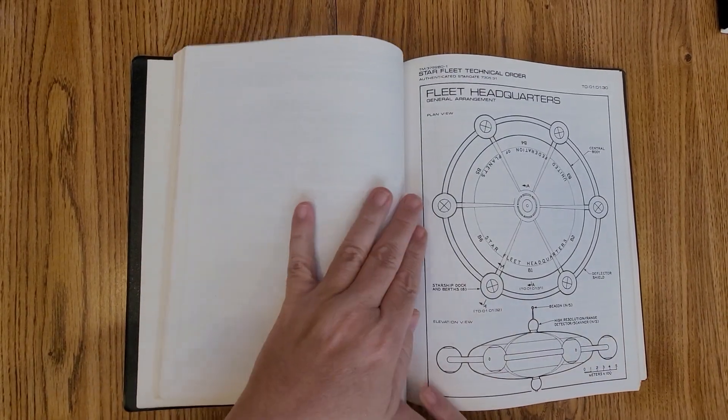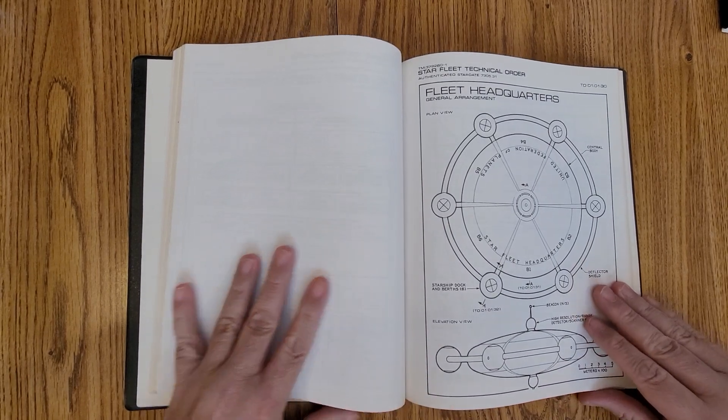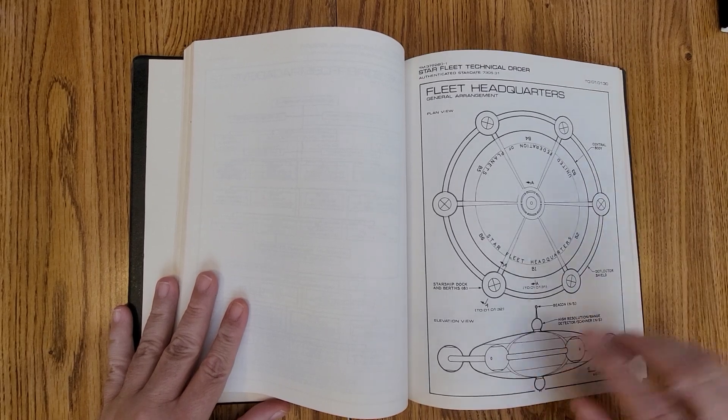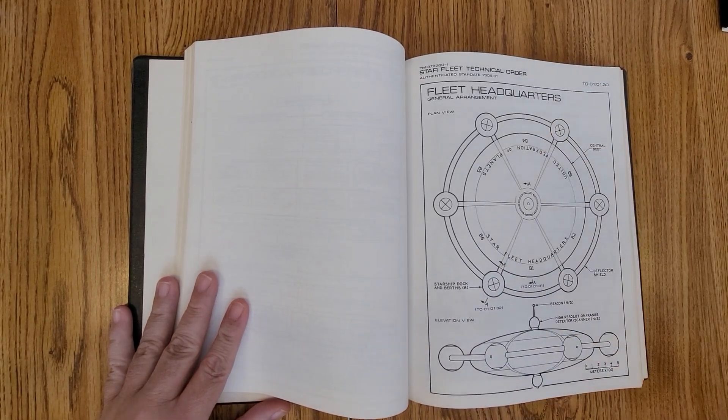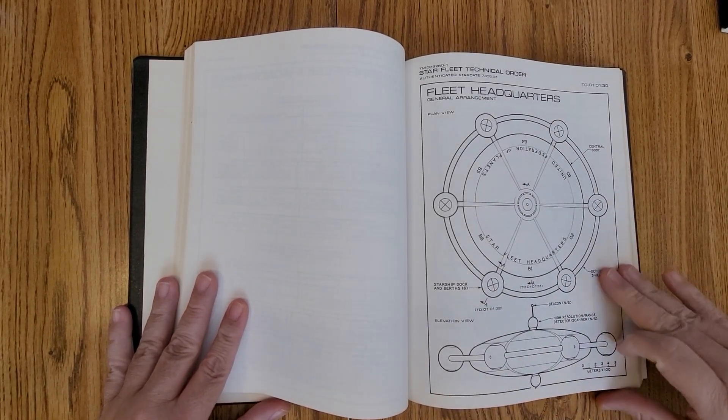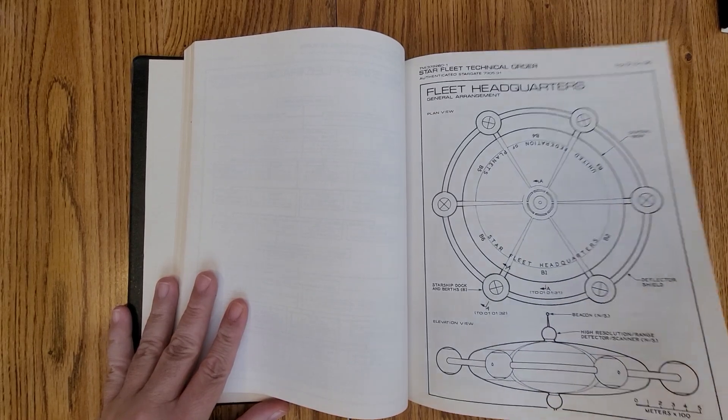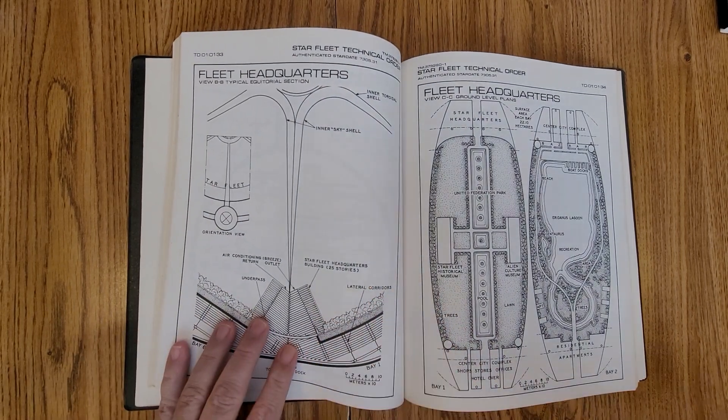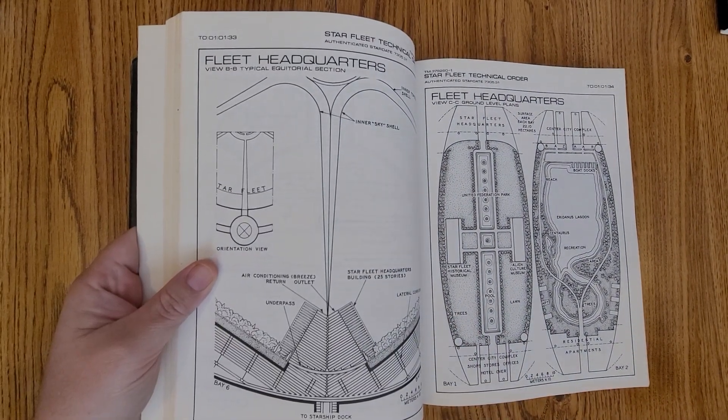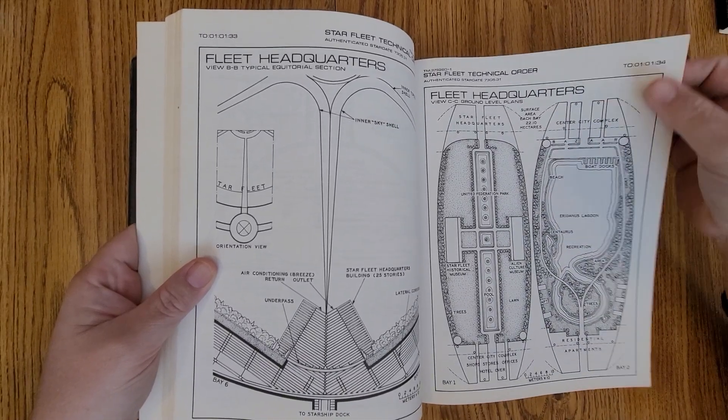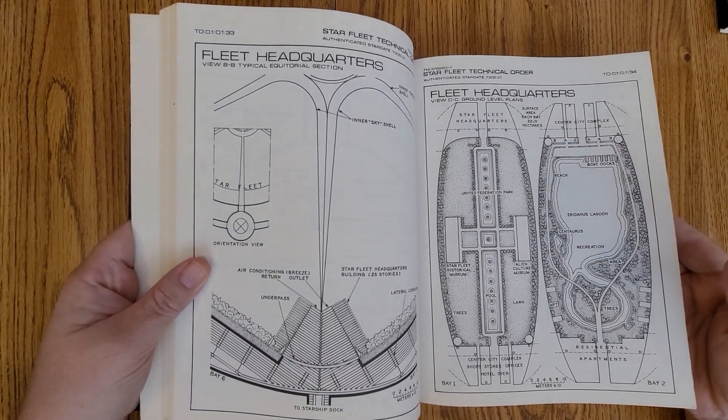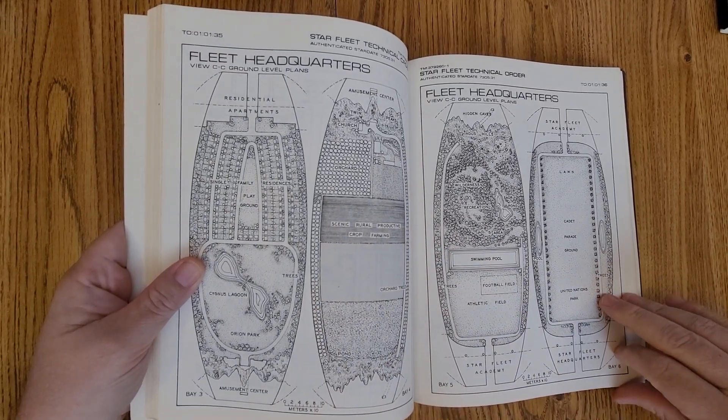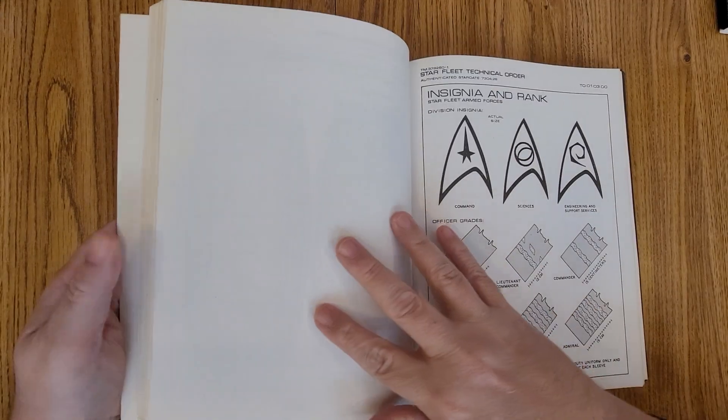Starfleet technical orders. Here is some of the designs, the general arrangement of fleet headquarters. You can actually see. So those of you that watch the original show, you'll see that like the space stations, K7 and stuff are all very similar to this. It does break down like the interior of the fleet headquarters, which is kind of neat. We don't see these very often. We will be getting to the starships, which I will go into a little more detail.